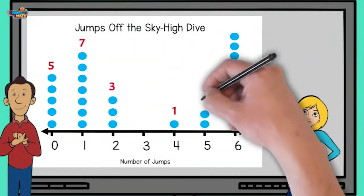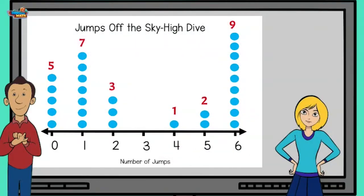Looking at our labels, I will add the amount of people that jumped four or more times. And you add the amount of people that jumped three or less times. Sounds good.